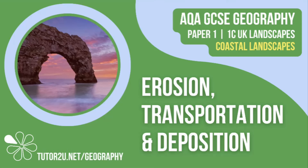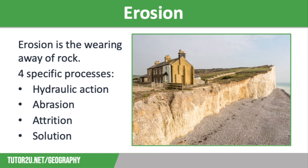Welcome to this Tutor2U revision video that looks at erosion, transportation and deposition. This is part of Paper 1 Unit C, Coastal Landscapes. The processes of erosion, transportation and deposition play a huge role in shaping the coastline. We're going to start off by talking about erosion.